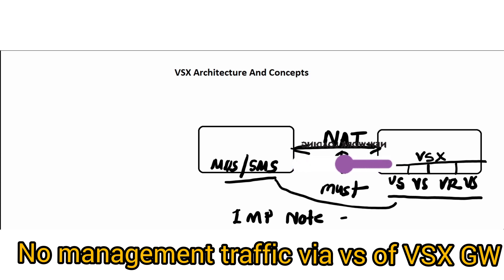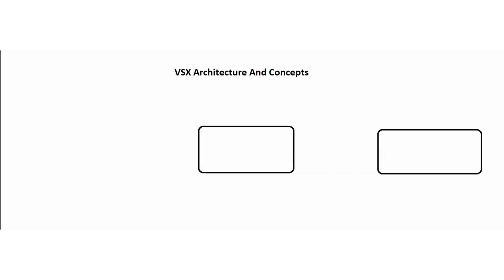A virtual system can communicate directly with the management server when there is a need, but with the constraint that the management server is not located behind that virtual system. Now let's see the ways to connect a management server with a VSX gateway. Consider the SMS or MDS on one side and the VSX gateway on the other — there are two options available. Number one is a local management connection.